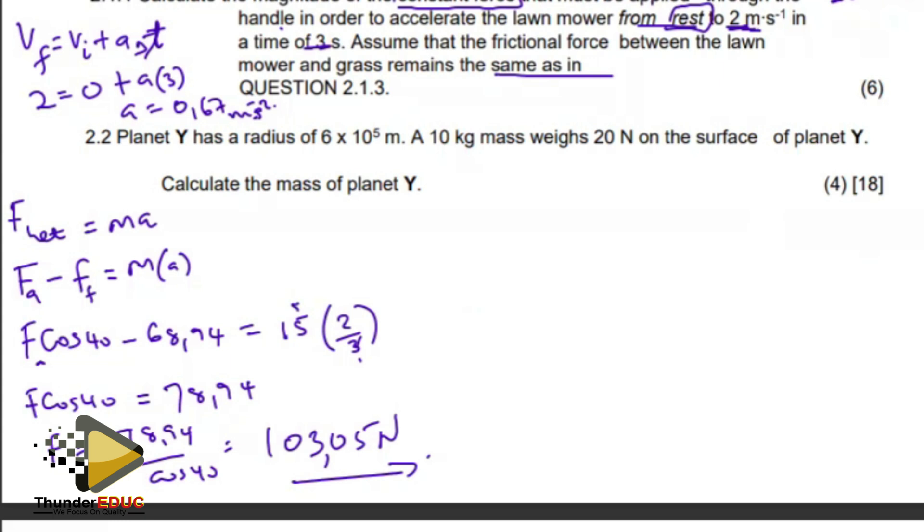Then 2.2, planet Y has a radius of this much, and then a 10 kg mass weighs 20 newtons on the surface of planet Y. Calculate the mass of planet Y. One thing we know about Newton's law of universal gravitation is that the force that is experienced between the bodies must be the same, regardless of how big or small it is. So if a 10 kg is experiencing this much force, the 10 kg must also apply this much force onto planet Y.